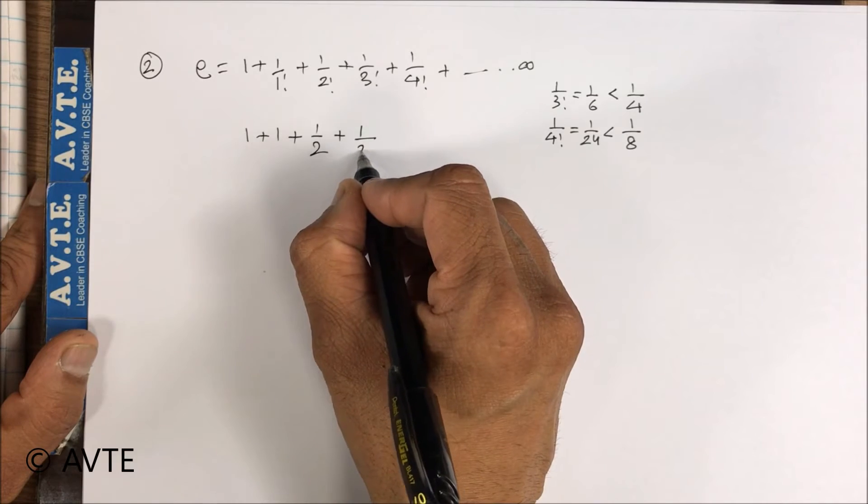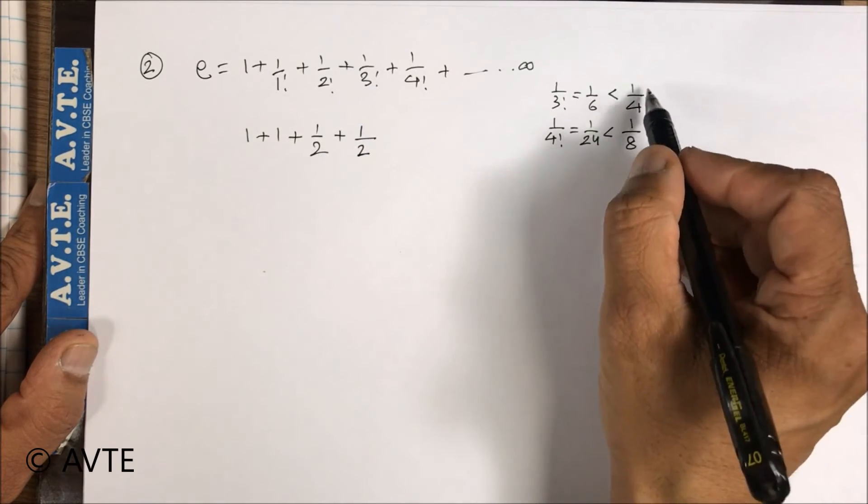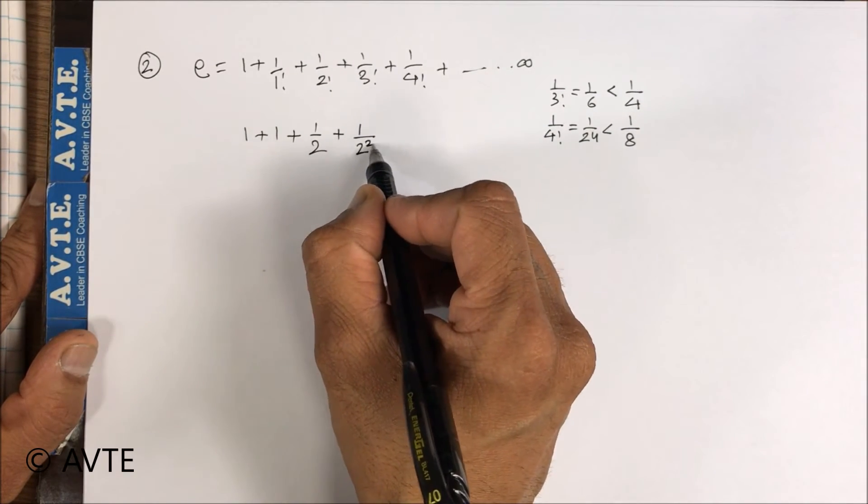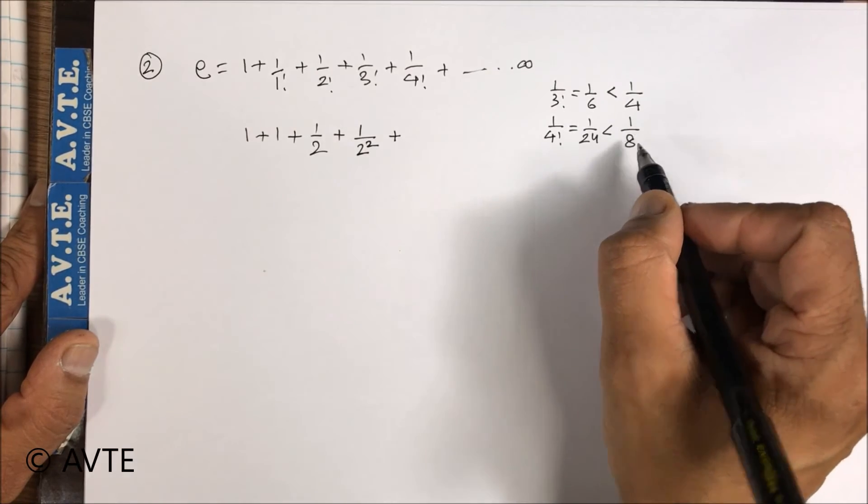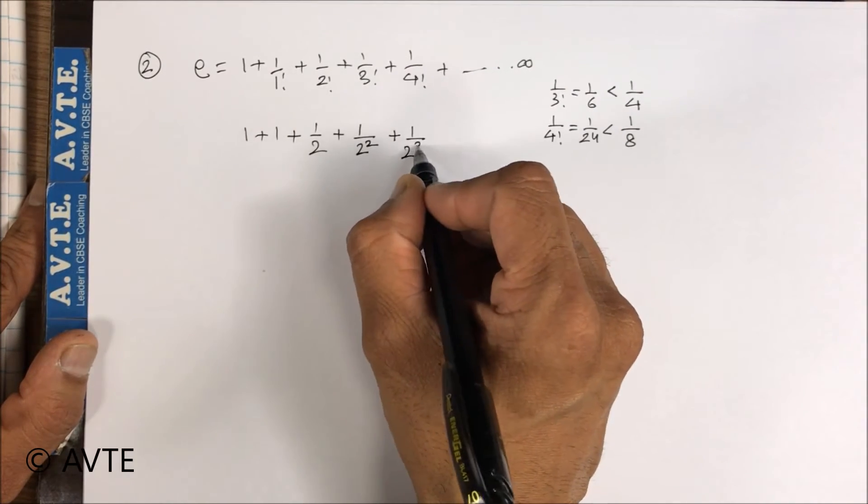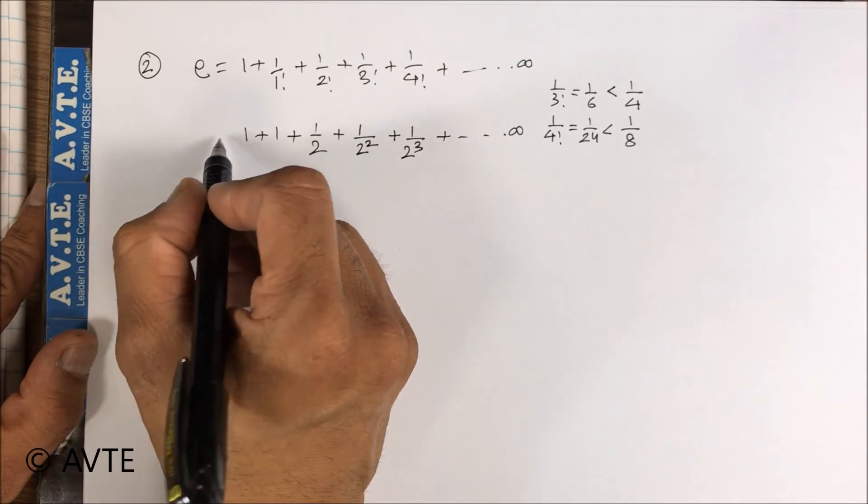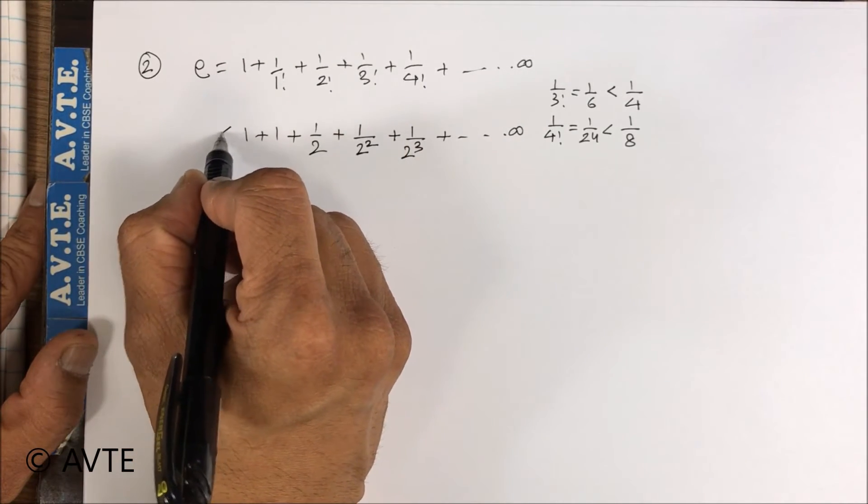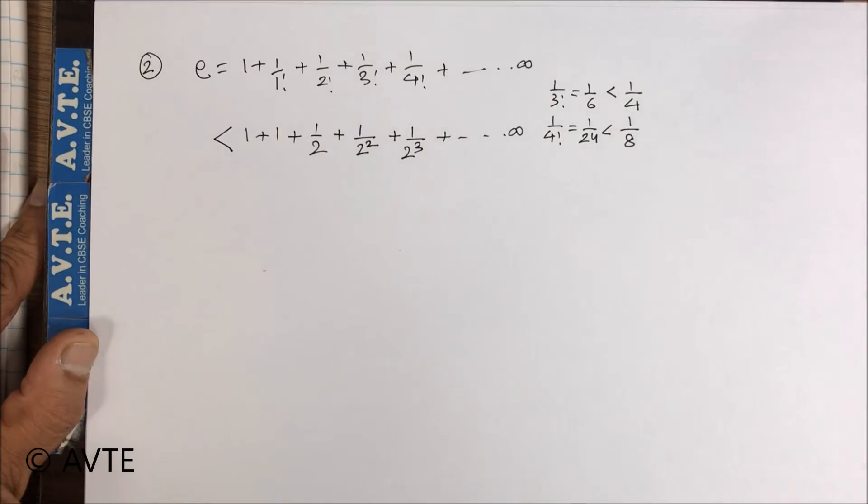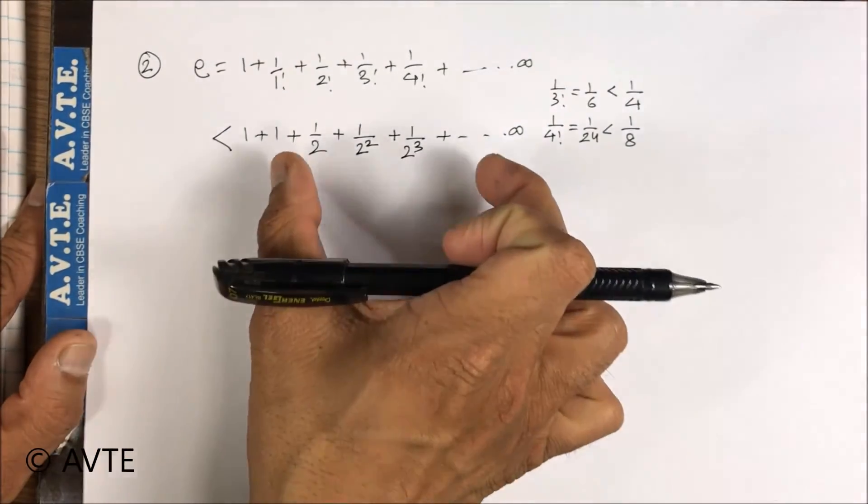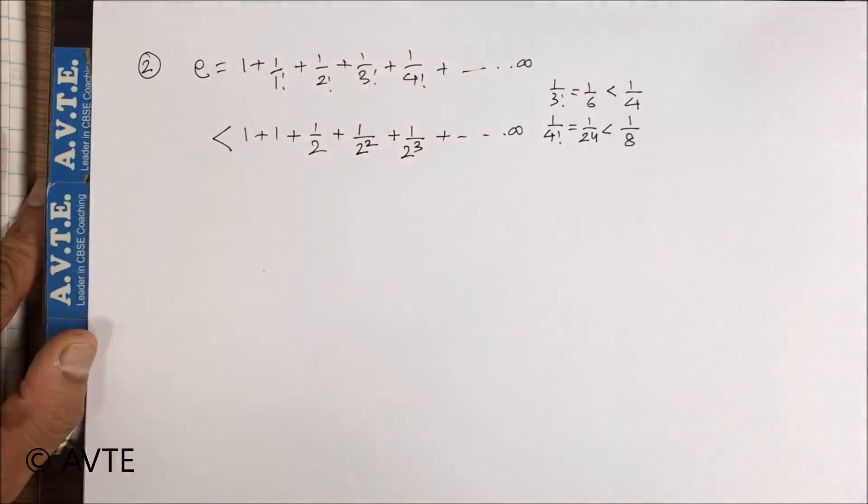Just see, if I write 1 by 4 that can be taken as 2 square, if I write 1 by 8 that can be taken as 2 cube. So now if I compare both the series, then I have to write that the series here below is more than the series above.